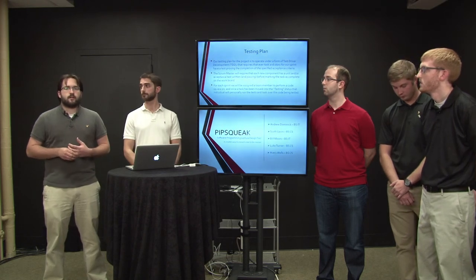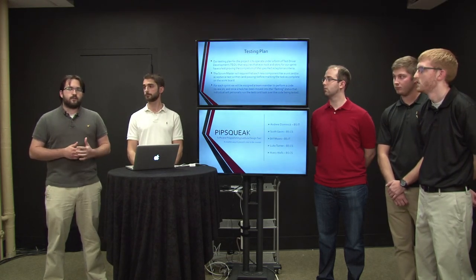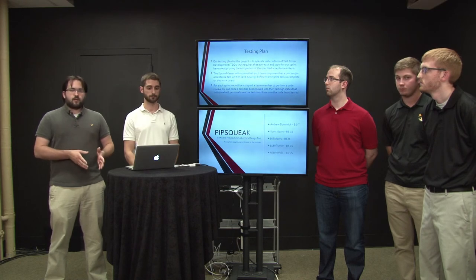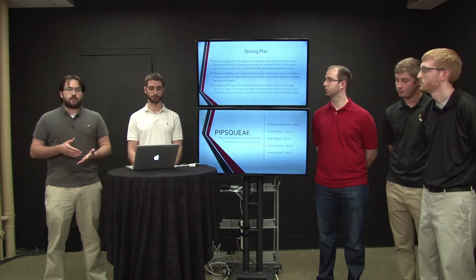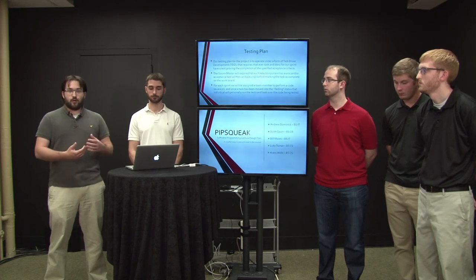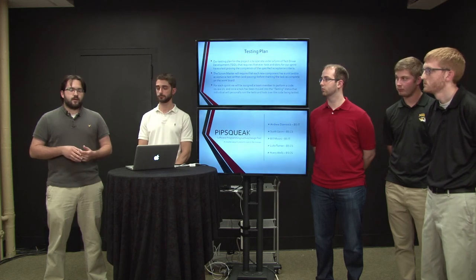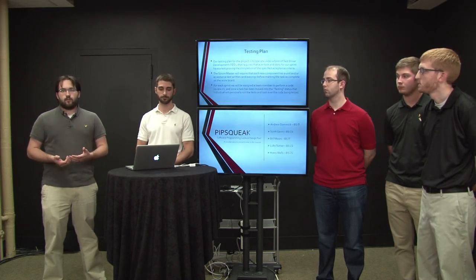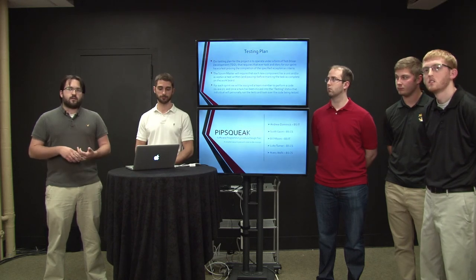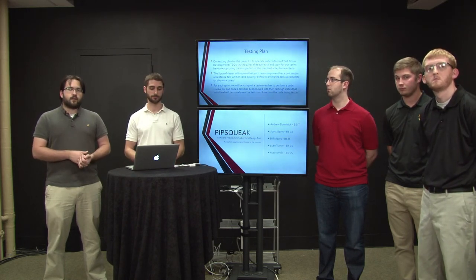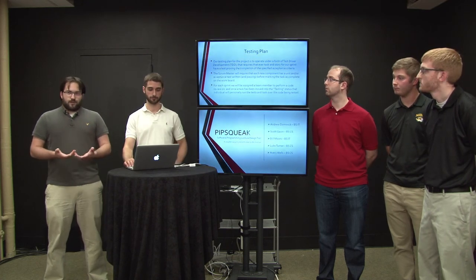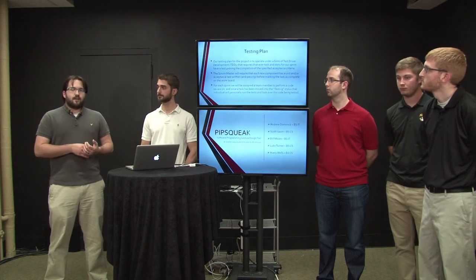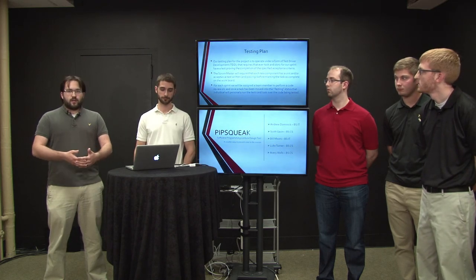Since we're going to be using a lot of new tools not familiar to all of us, we're going to implement a form of test-driven development. We're going to assign stories and tasks as part of the Scrum methodology, and then each sprint, we're going to assign a person to code review another programmer — switching that up so you're not always reviewing the same person. You'll write your tasks, write your unit tests, and then someone will code review and move it into the testing board. The product owner and Scrum master will then make sure all acceptance criteria are met before marking it complete, ensuring code integrity and that any changes don't break prior sprints.